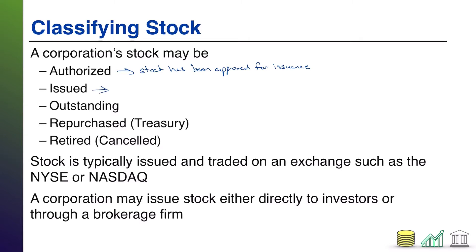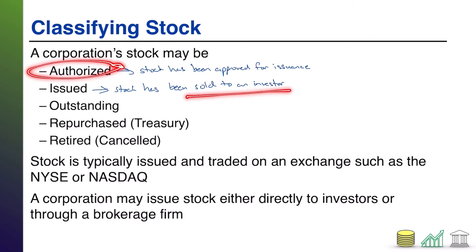Next up we have issued. This means that the stock has been sold to an investor. I want to point out that the stock does not still need to be in the hands of investors to be considered issued. It simply means that you took some of that authorized stock and at some point sold it to an investor — even if that investor doesn't have it anymore. That's what it means to be issued.